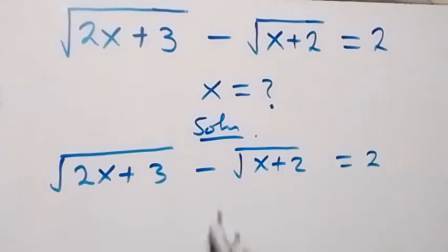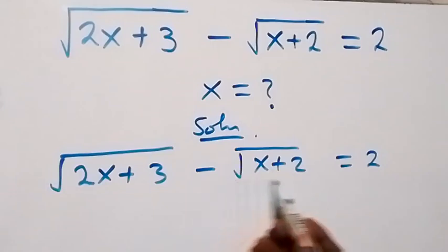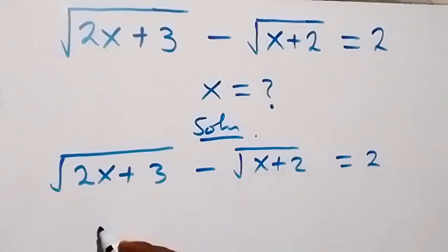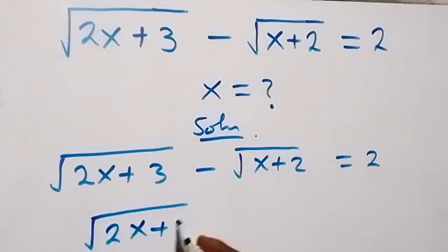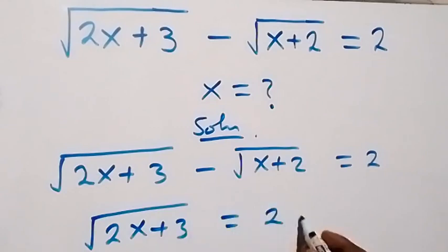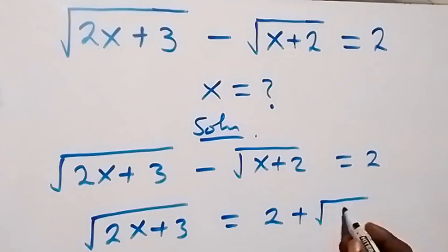We can separate this to the other side, and the minus here becomes plus. So we have square root of 2x plus 3 on the left, and this side becomes 2 plus square root of x plus 2.